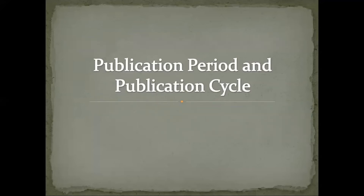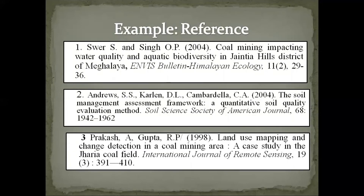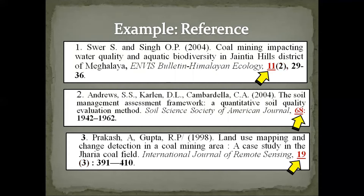Next, what is the publication period and publication cycle of a research journal article? To understand them, go to any research journal article and randomly pick any references. In this video, we randomly pick three references. We are least concerned about the author's names, journal names, or titles — what is of great interest are the numbers highlighted in red color. What do they actually mean or indicate?